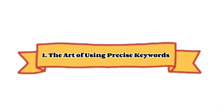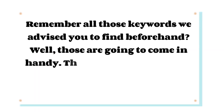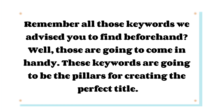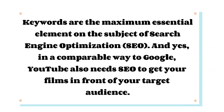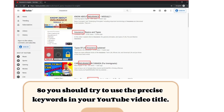Tip 1: The Art of Using Precise Keywords. Remember those keywords we advised you to find beforehand? Those are going to come in handy. Keywords are the most essential element when it comes to search engine optimization (SEO). Just like Google, YouTube also needs SEO to get your videos in front of your target audience, so use precise keywords in your YouTube video title.